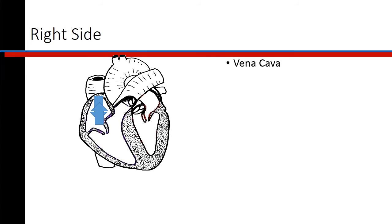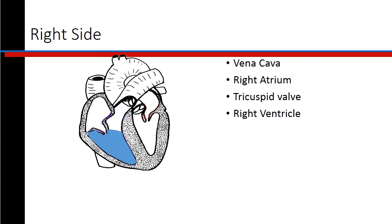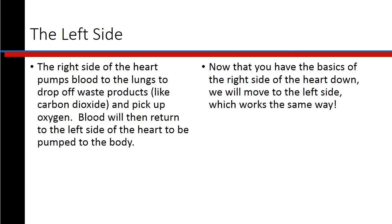Let's animate it. The vena cava transports blood to the right side of the heart. The right atrium fills, the tricuspid valve opens, and the right ventricle fills. The ventricle contracts and pushes blood through the pulmonary valve and into the pulmonary artery to be transported to the lungs. The right side of the heart pumps blood to the lungs to drop off waste products like carbon dioxide and pick up oxygen.